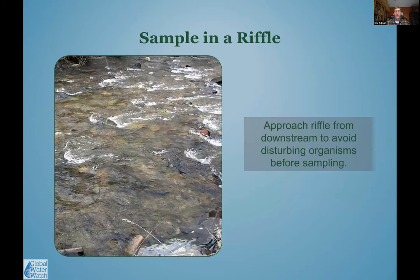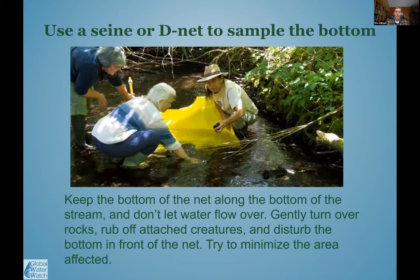For the field procedure, we first find a good location to sample — generally a riffle. We approach from downstream so we're not kicking organisms loose from upstream into our sample area. We use a seine, D-net, or both. With the seine, one or two people hold the poles, keep the net angled at about 45 degrees, place it on the stream bottom, weight it down, then turn over rocks, rub them off, and disturb the bottom immediately in front of the net to collect creatures that float in.